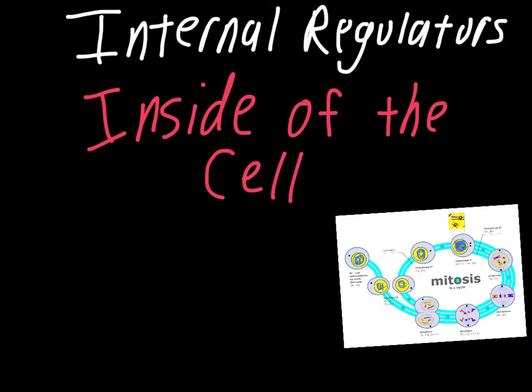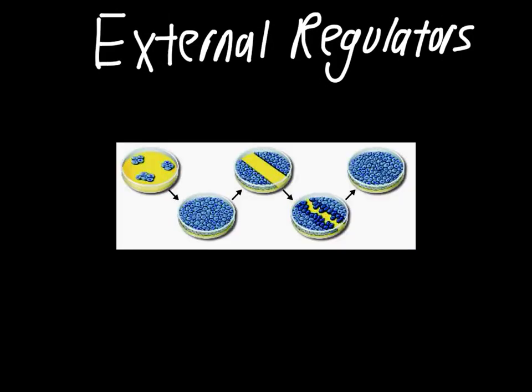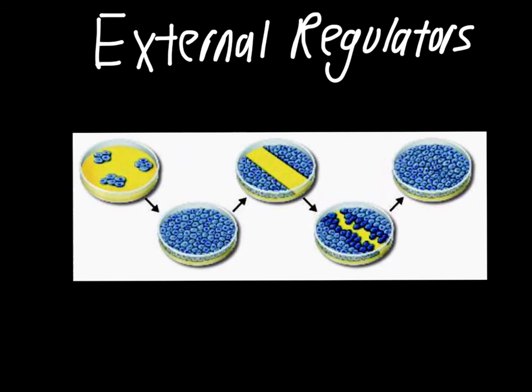The whole group called external regulators are going to be dealing with things happening outside the cell. To talk about external regulators quickly, this is another picture from your textbook. And what these proteins do is they allow cells to recognize when they're near other cells around them. I think this picture from your textbook does a great job showing this concept.